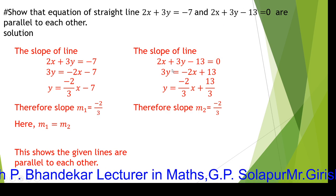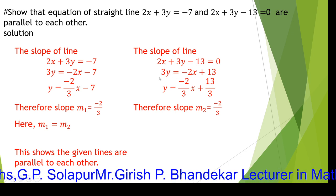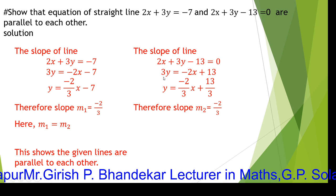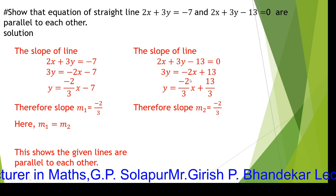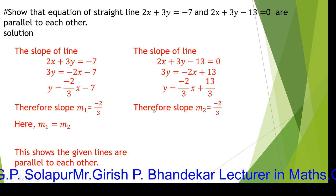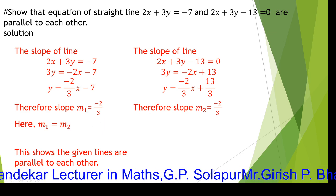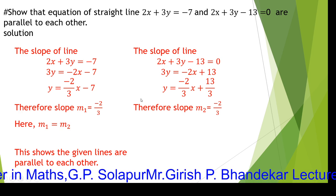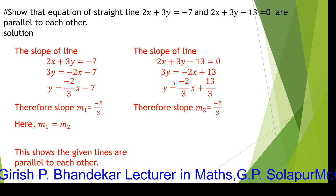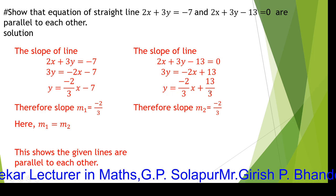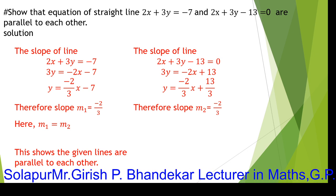For the second line 2x plus 3y minus 13 equals 0, keeping 3y as it is and transforming the other terms to the other side, then dividing the complete equation by 3, we get y equals minus 2 by 3 times x plus 13 by 3. The coefficient of x is minus 2 by 3, so the slope of the second line is also minus 2 by 3.